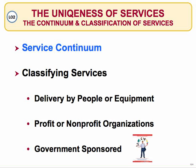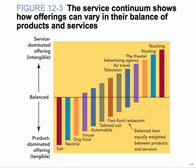A service continuum — delivered by people or equipment, profit or non-profit, government sponsored. There's a sliding scale that shows what that looks like. On one end, service-dominated and intangible; on the other, product-dominated and tangible. About in the middle are things like a fast food restaurant, balanced equally between products and services. A tailored suit is another example — what was your experience with the tailor? It's a good graph in that sense.